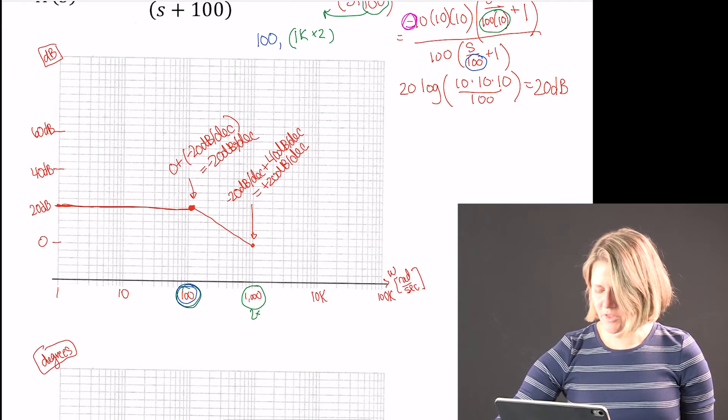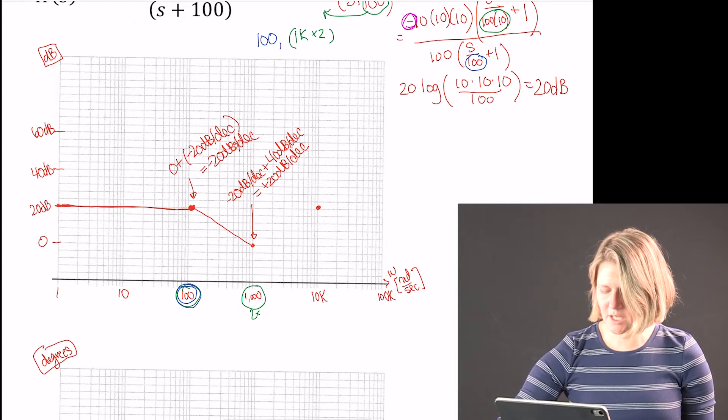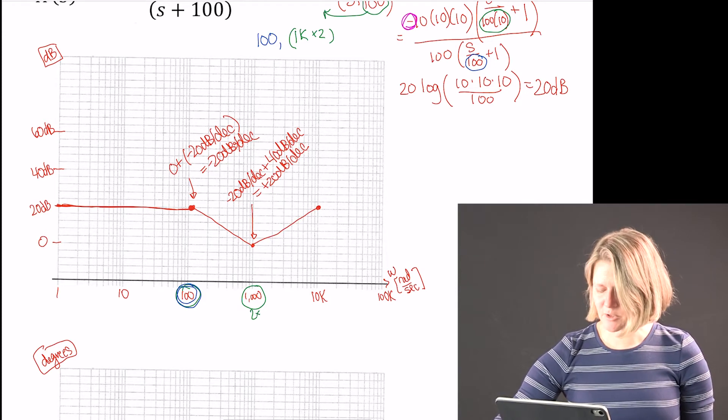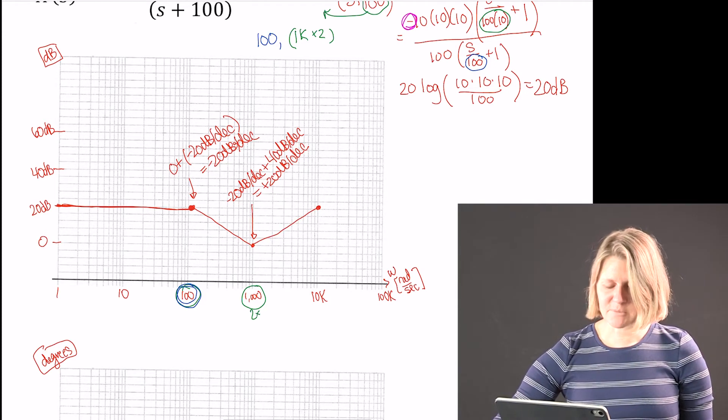So from minus 20 we have a change of plus 40 dB per decade. That gives us an effective plus 20 dB per decade change.